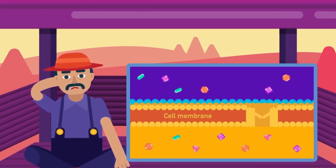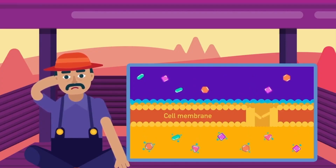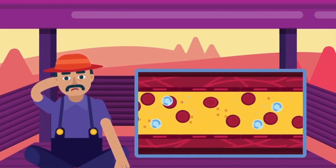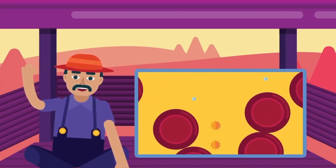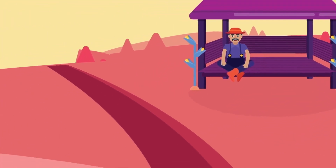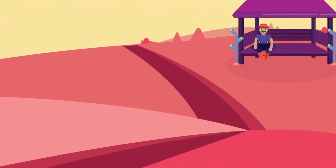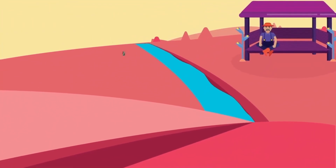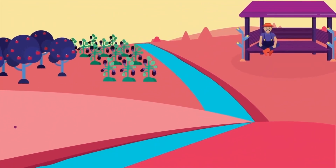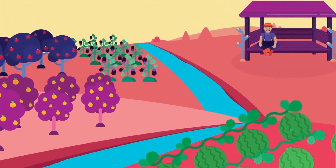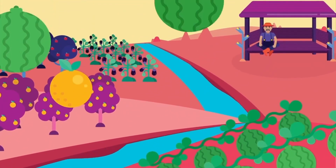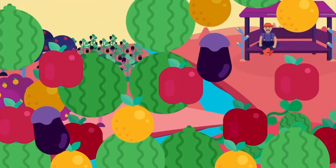So why do we still need a circulatory system? The answer is because it gives us a much faster process. The network of blood vessels in our body is the same as channels of water spread across farms, so that all of the crops get access to water and nutrients.